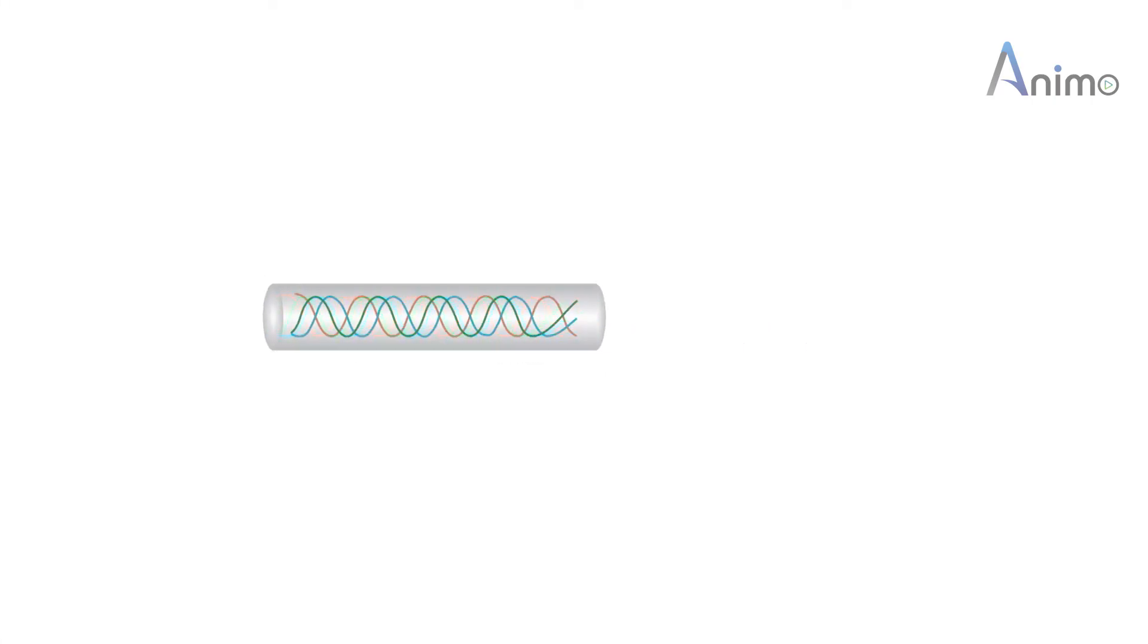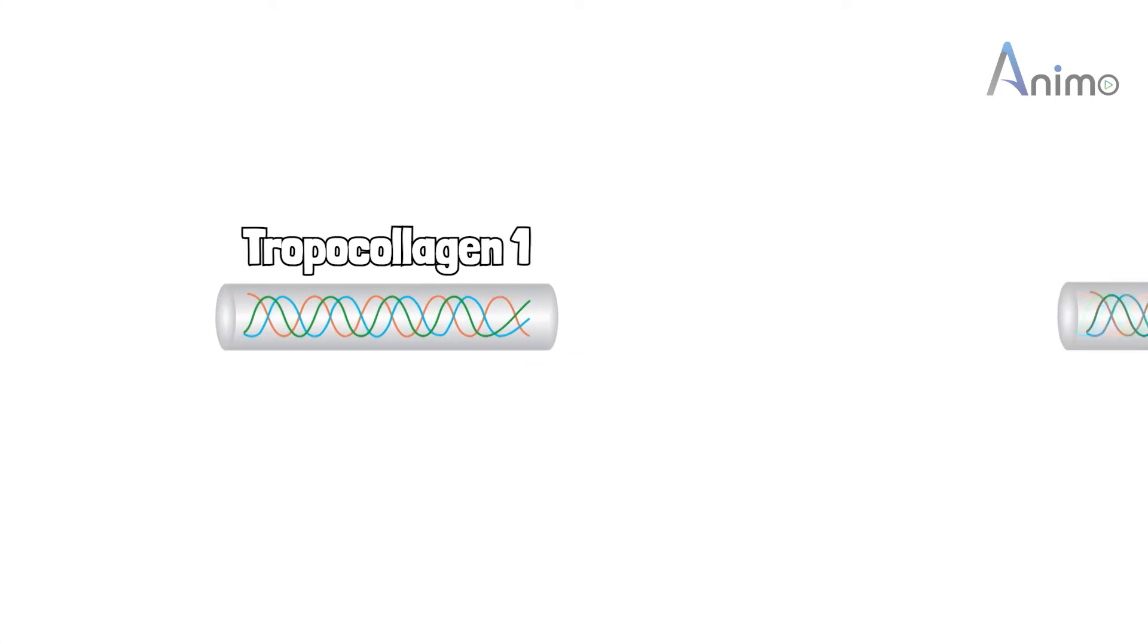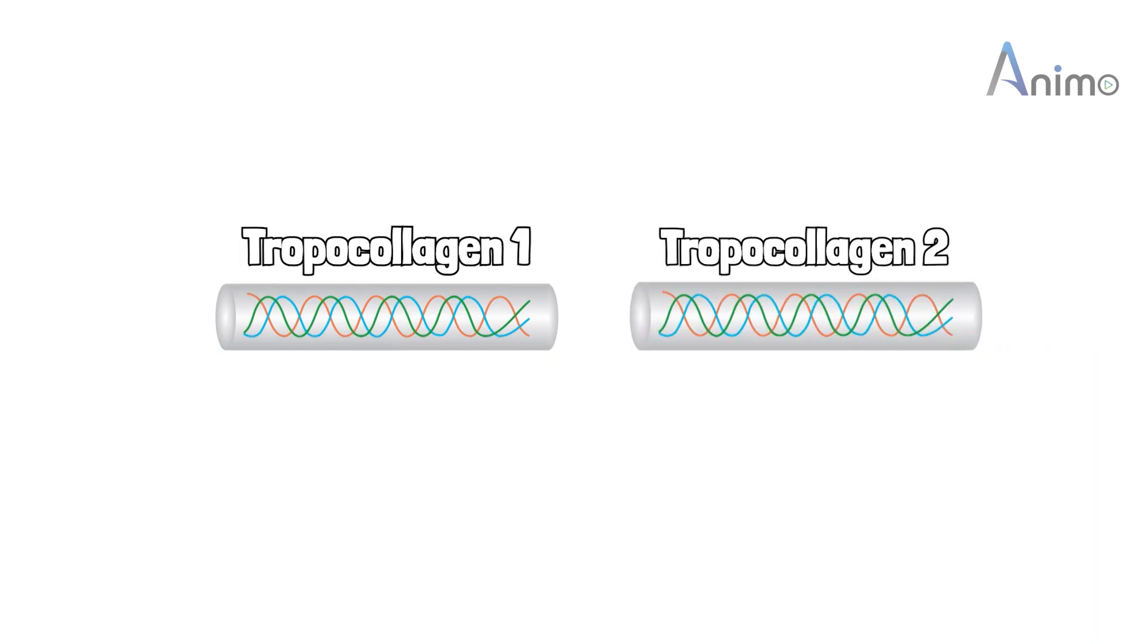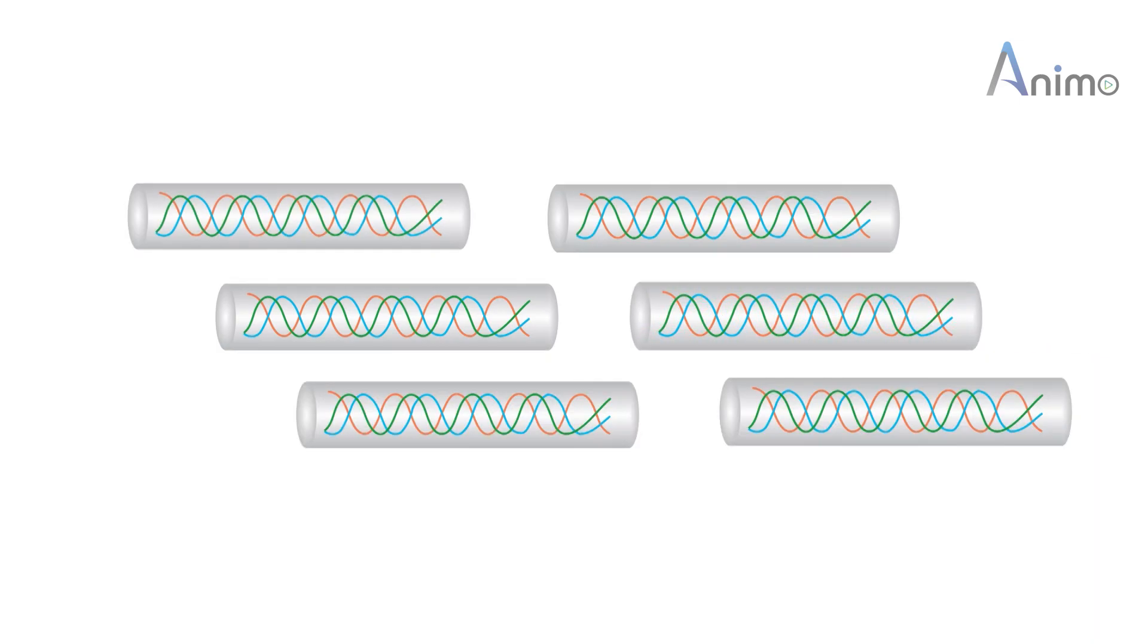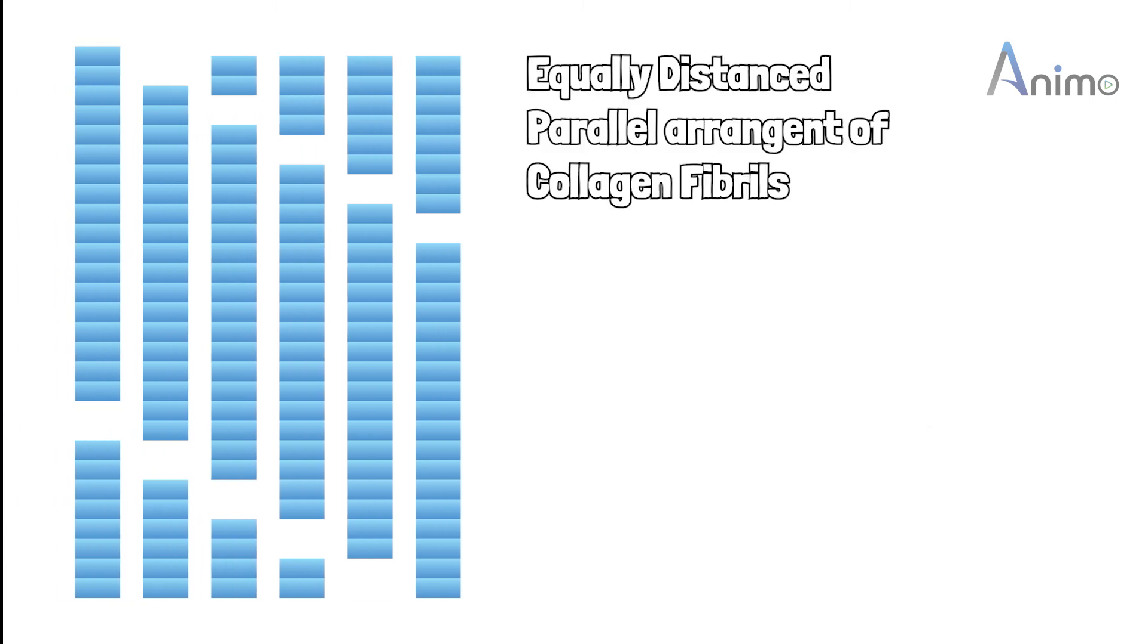Did you understand? Let me explain. This is one tropocollagen and this is another one. They combine in such a way that they leave a gap of three-fourths of the molecule of collagen itself from its nearby molecule. This happens to all molecules, and we get equally distanced placement, which is known as the staggered pattern. Under electron microscope, a part of it seems black and the other seems white.